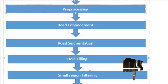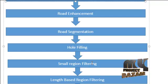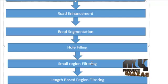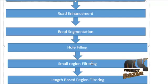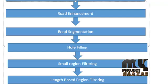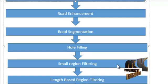Then small region filtering is applied. Small regions that do not belong to any road are distributed all over the image. These regions are not of interest when the focus is on road extraction. Therefore, they are removed by a simple filtering technique on the basis of area — regions whose total area is less than a threshold are eliminated from further processing.